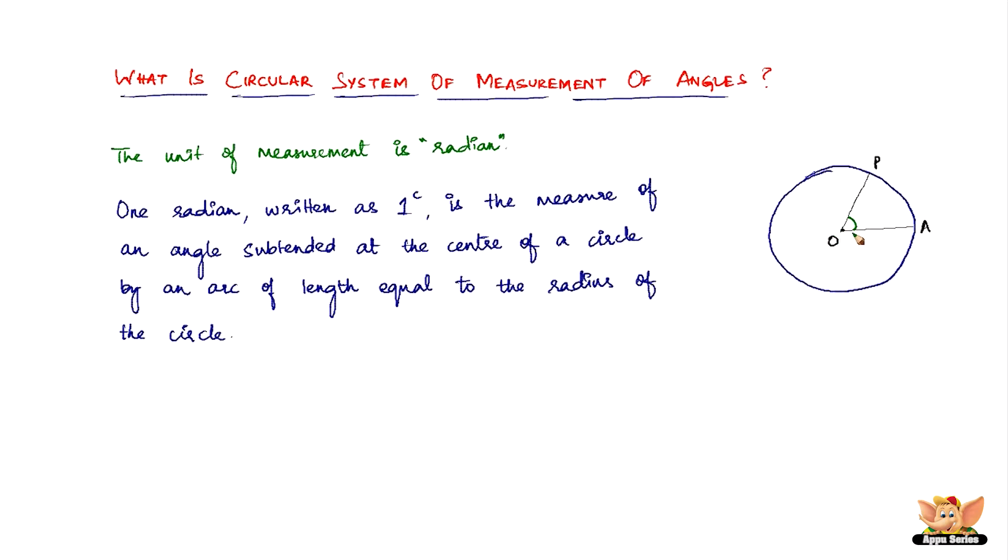Now if OA and OP are equal to the arc PA, then the angle subtended at the center is equal to 1 radian. This is how we define it as a radian and the unit of measurement as far as the circular system is radian.